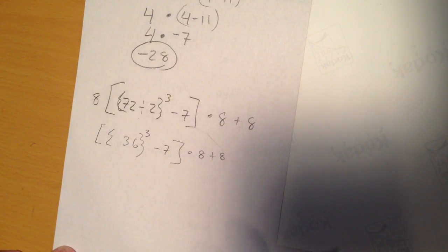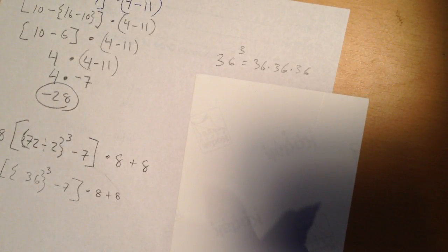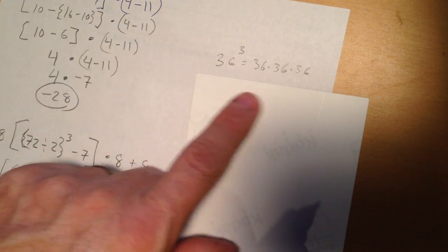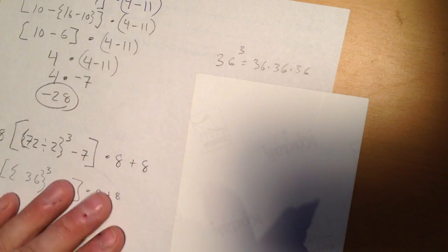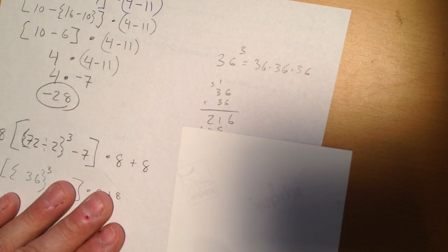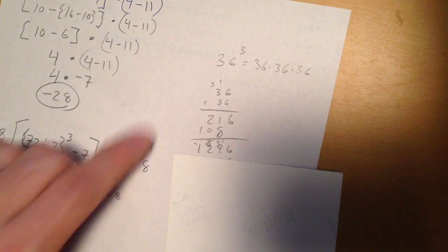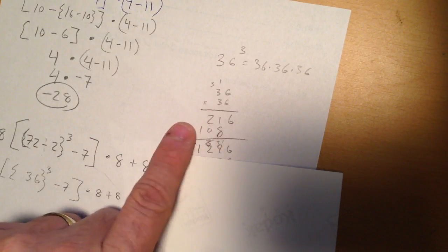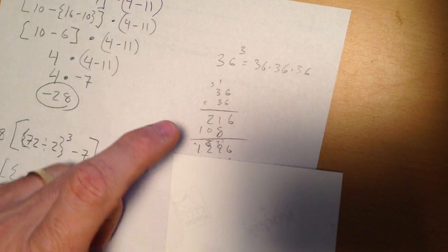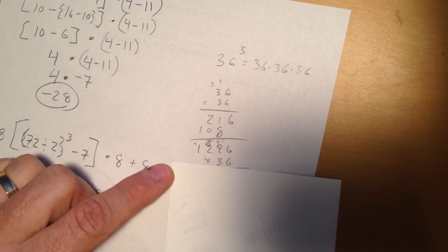So, 36 to the third power. Well, that means 36 times 36 times 36, multiply it by itself three times. Now, we did this one the other day. 36 times 36 was 1296. So, that's two times, and we walked through that the other day. So, we're going to multiply this by 36 again.